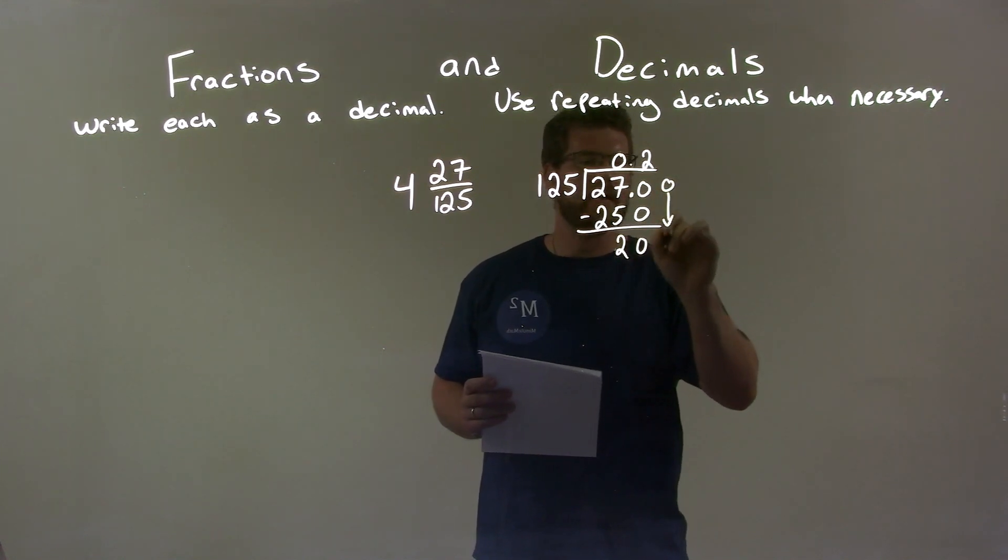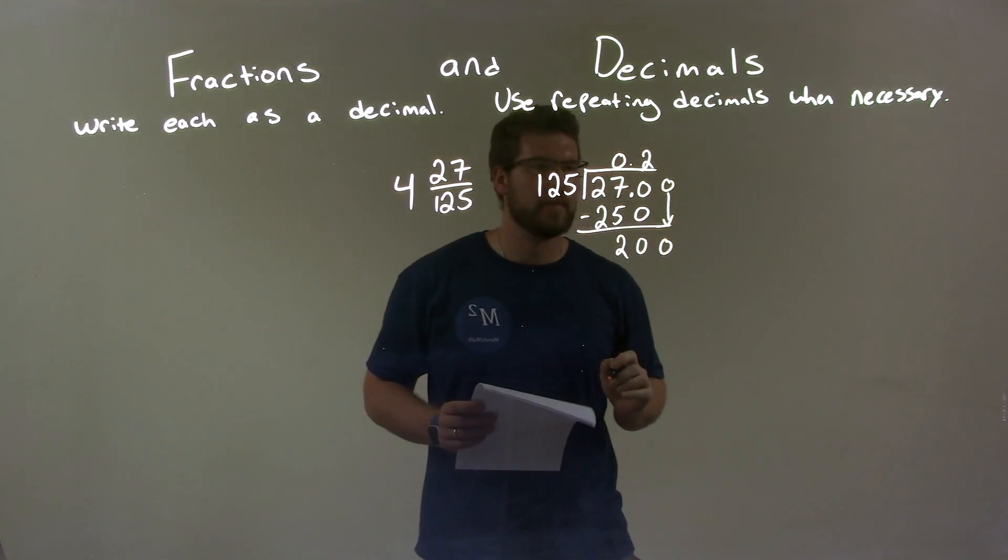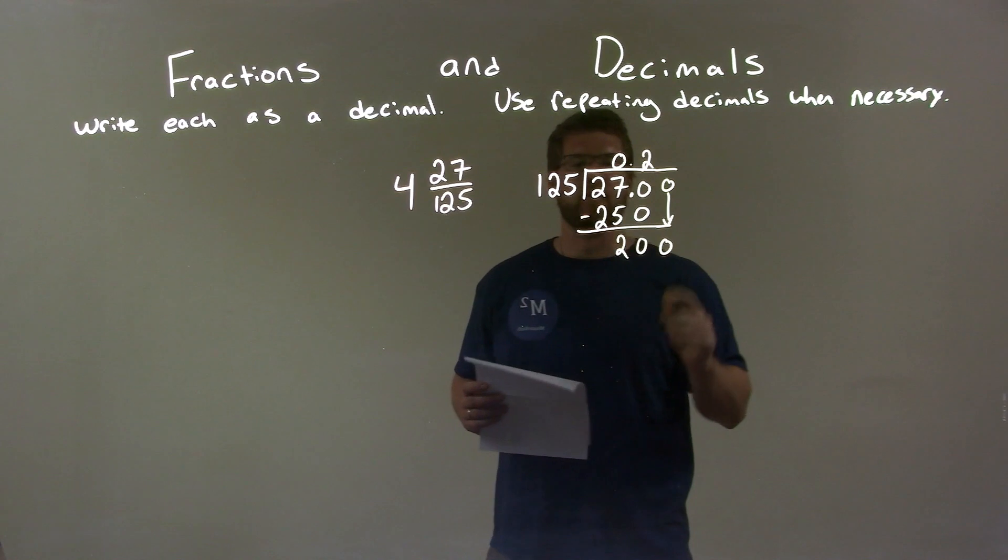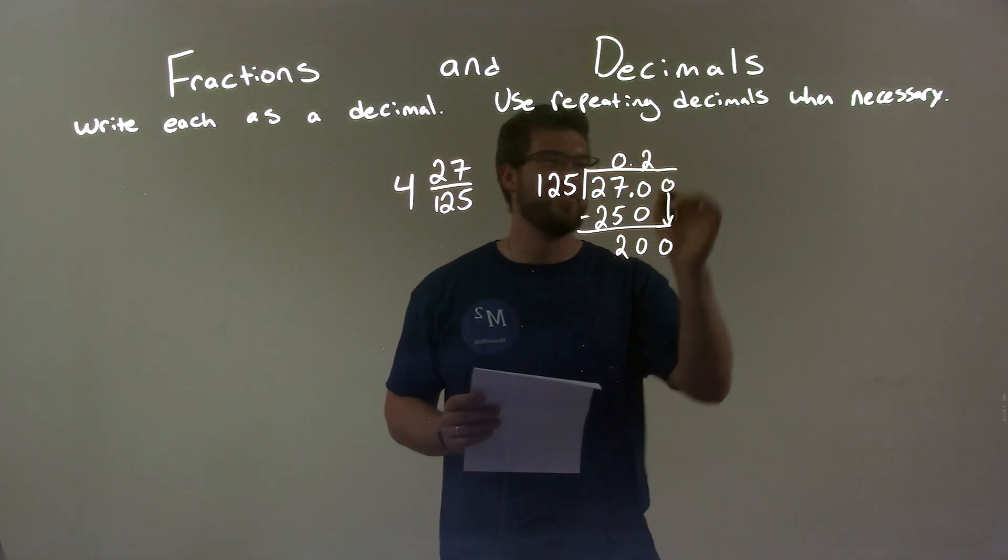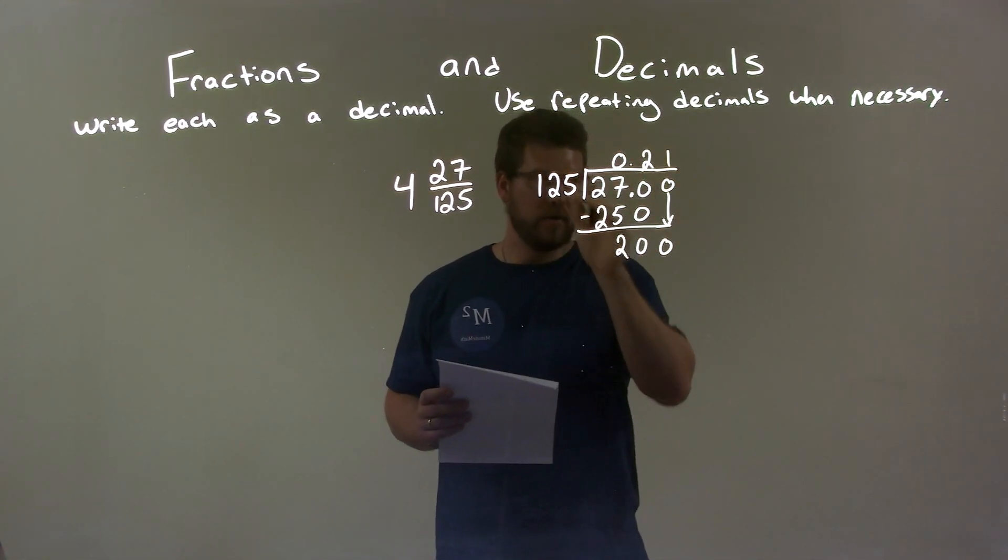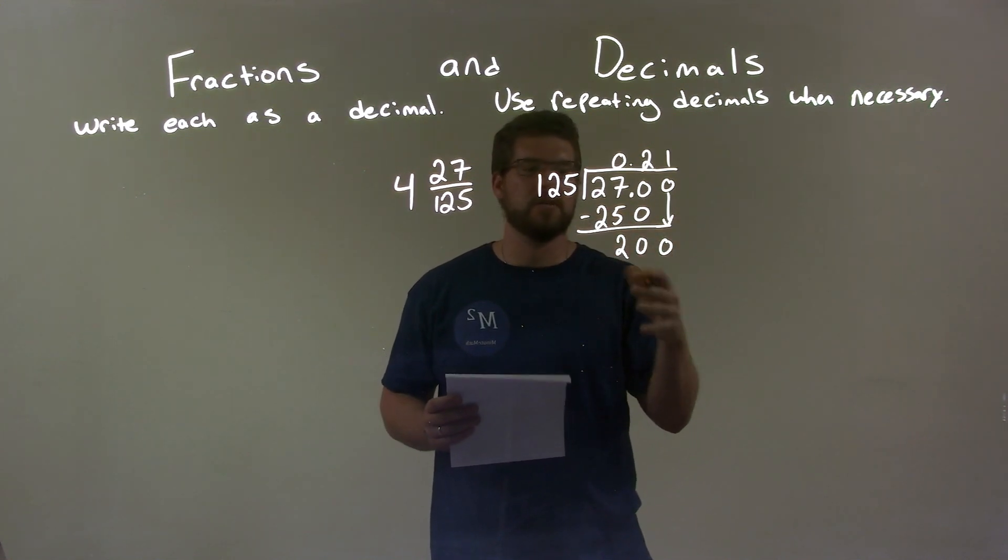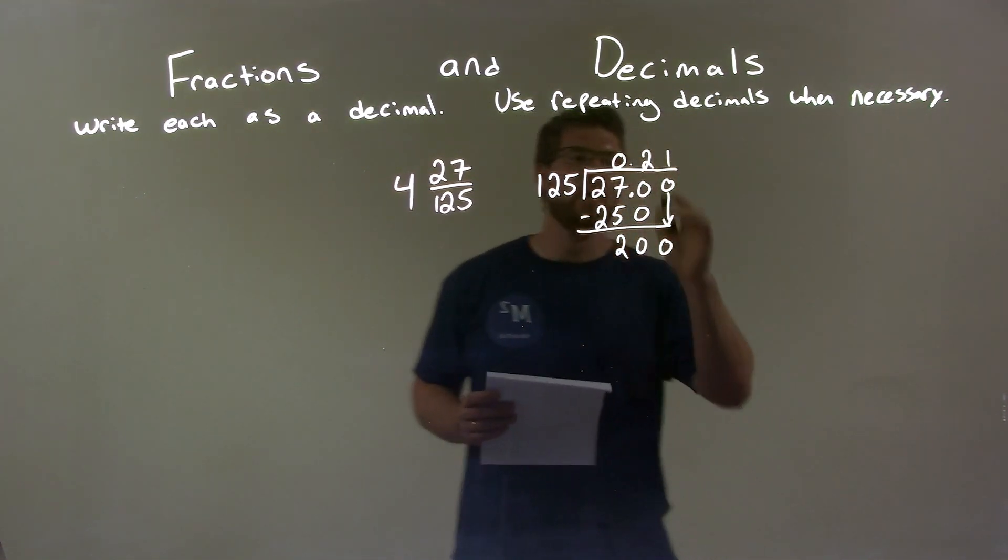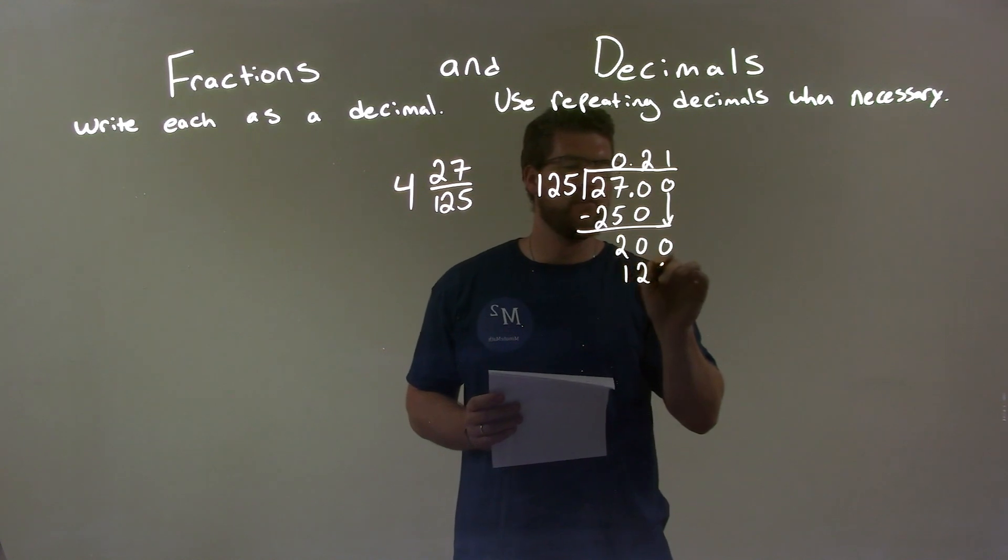We add another zero and bring that down, and now we have 200. So, how many times does 125 go into 200? That's just one. 2 is 250, and that's larger. We need to keep it 200 or below. 1 times 125 is 125.